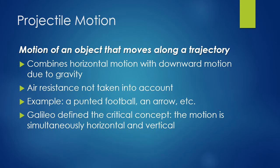Projectile motion — Galileo did a lot of work on this as well. We won't be doing calculations with it; we just need to know the characteristics. Projectile motion is the motion of an object along a trajectory — think of punting a football, shooting an arrow, or firing a cannon. The path almost looks like a parabola. Projectile motion combines both horizontal motion and downward vertical motion, and Galileo defined the critical concept that it is simultaneously horizontal and vertical.